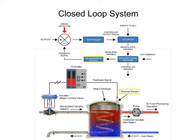The measurement device senses the measured variable and produces an output signal that represents the status of the controlled variable. The thermal sensor that measures the water temperature in the heat exchanger is the measurement device. The sensor provides an electrical signal to the controller, defined as the feedback signal in the block diagram.